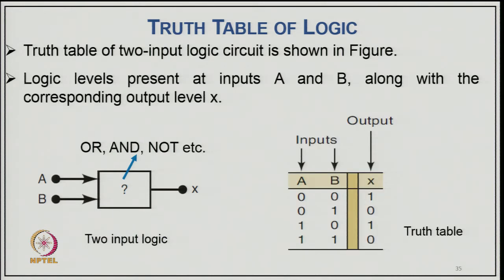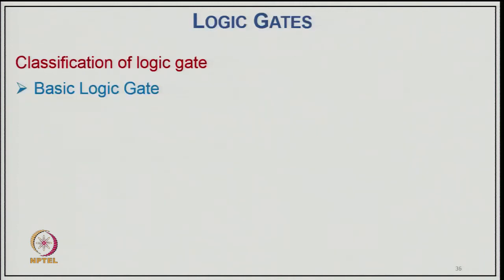Two-input logic gate truth tables list all logic levels present at inputs A and B along with corresponding output X — giving four combinations: 00, 01, 10, and 11. The output depends on which logic gate is used. The classification of logic gates is: basic logic gates are OR and AND; universal logic gates are NAND and NOR; and special logic gates are XOR and XNOR.